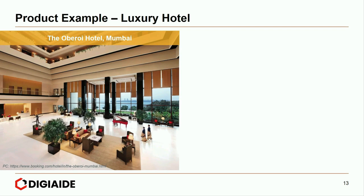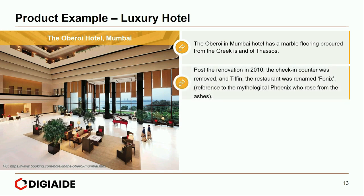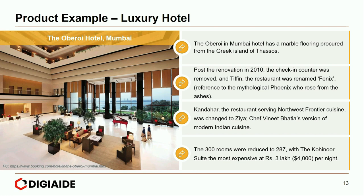The next example under product is the Obra Hotel in Mumbai. The Obra in Mumbai has marble flooring procured from the Greek island of Thassos. Post the renovation in 2010 due to a terrorist attack, the check-in counter was removed and Tiffin restaurant was renamed Phoenix — a reference to the mythological Phoenix who rose from the ashes. Kandahar, the restaurant serving Northwest Frontier cuisine, was changed to Zia, Chef Vineet Bhatia's version of modern Indian cuisine. The 300 rooms were reduced to 287, with the Kohinoor suite the most expensive at Rs. 3 lakh, about $4,000 per night. So that's it folks, this brings an end to the topic on service product.